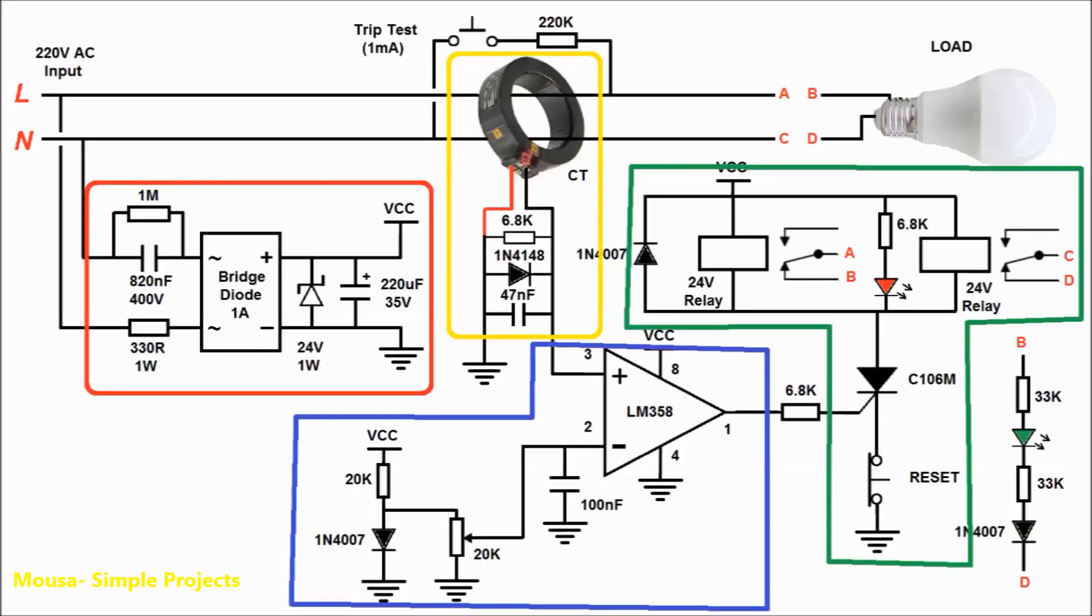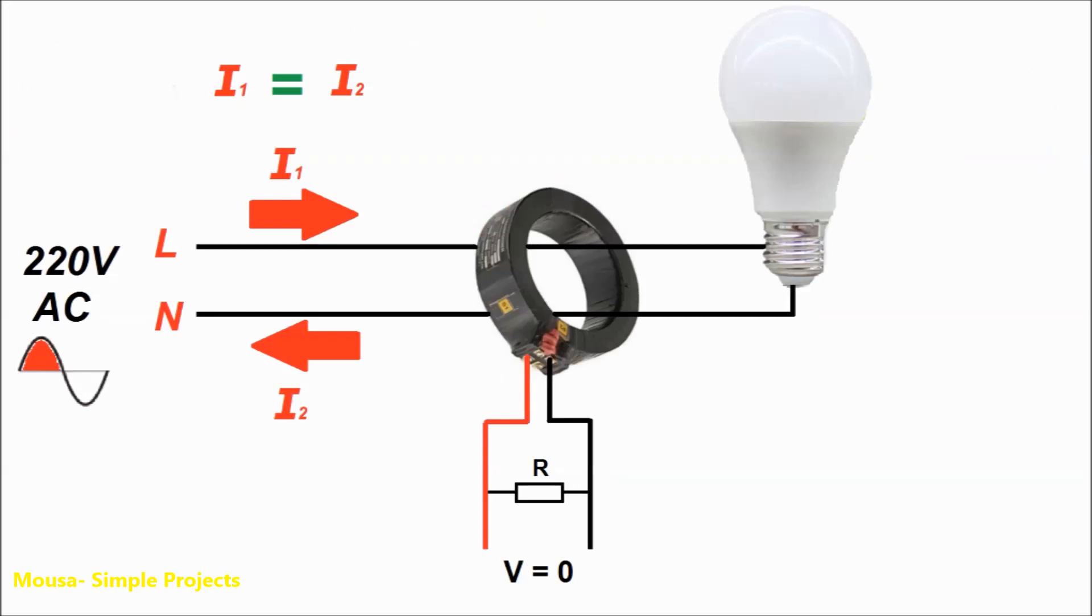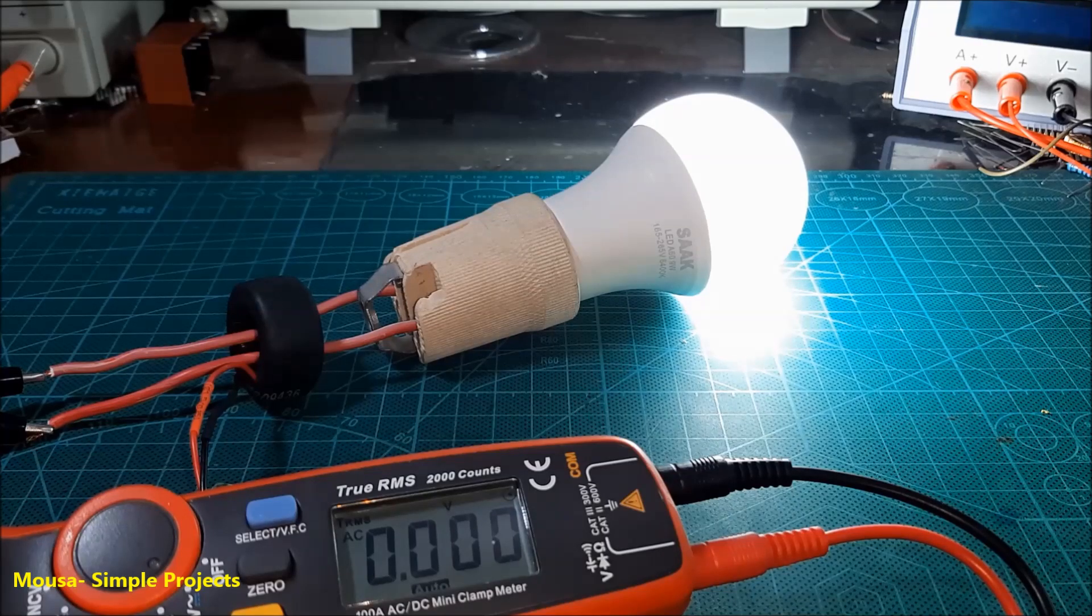This is my circuit. It consists of four parts. The first part is a current transformer. In normal situations, the current through the live wire is exactly equal to the current through the neutral wire, so the electromagnetic fields around the two wires cancel each other and the output voltage from the current transformer will be zero volts.